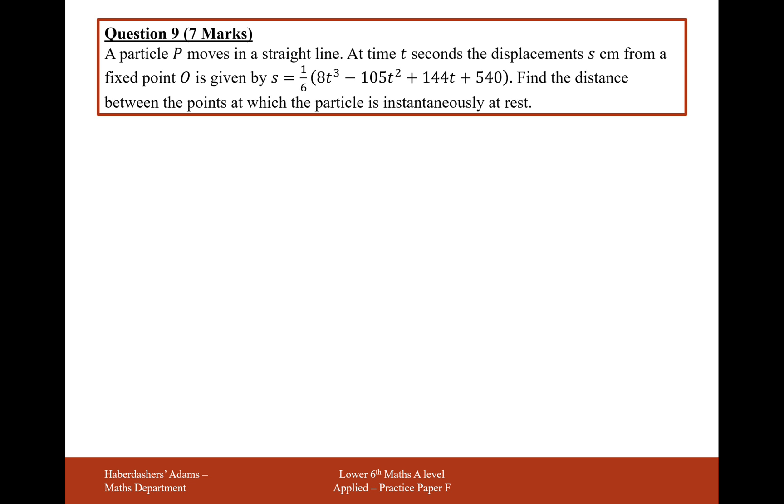A particle P moves in a straight line. At time t seconds, the displacement s in centimeters from a fixed point O is given by s = 1/6(8t³ - 105t² + 144t + 540). Find the distance between the points at which the particle is instantaneously at rest.